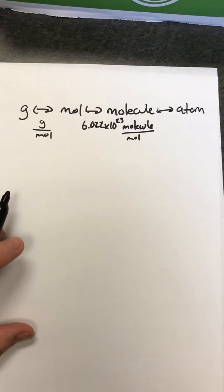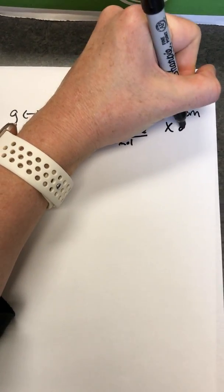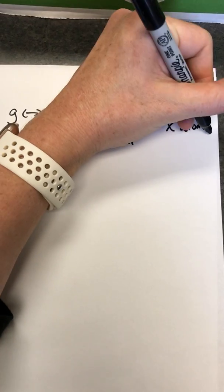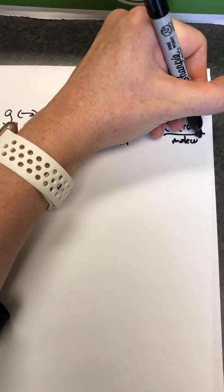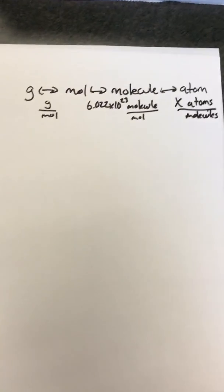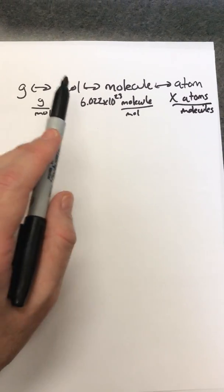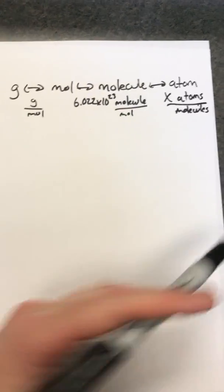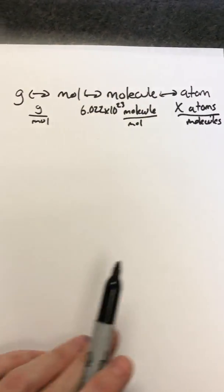A mole of a molecule would have 6.022 times 10 to the 23rd molecules. Then to go from molecule to atom, we need to know how many atoms are in that molecule. We'll be using dimensional analysis, and we always have to follow the order: grams to moles, moles to molecules, molecules to atoms.